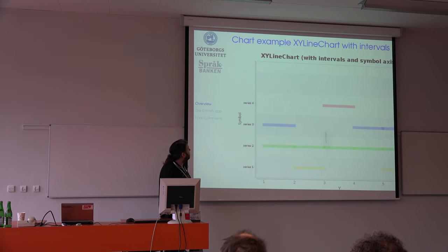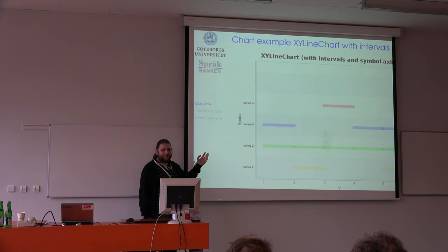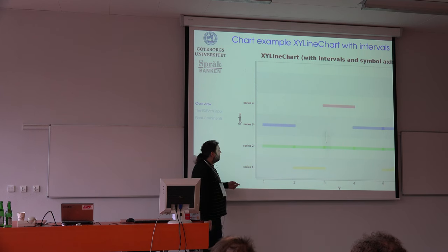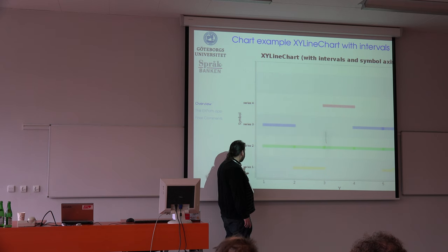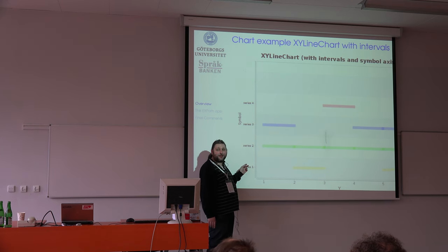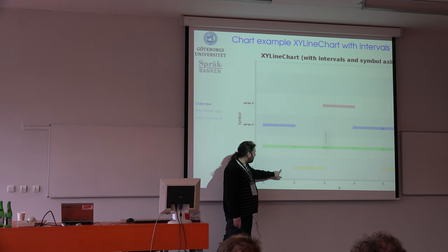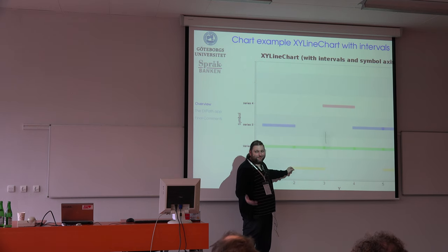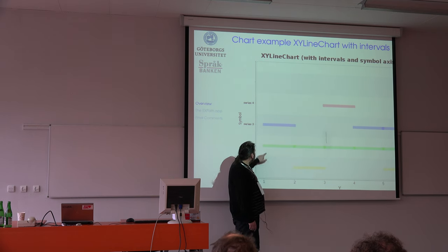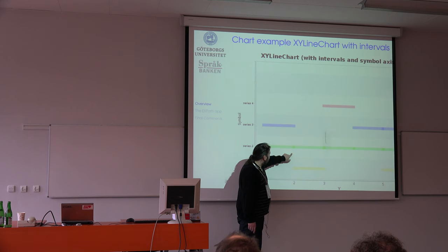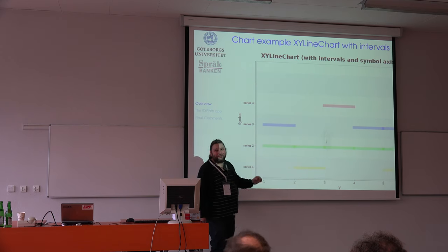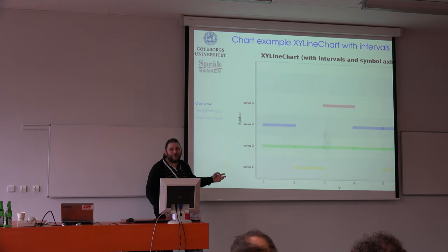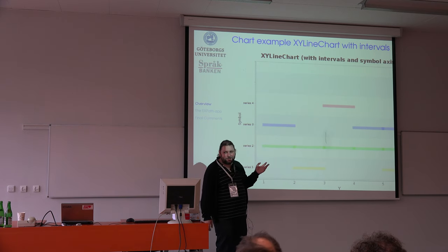Something which is brand new is the XY line chart with intervals. This makes it possible to show, for instance, that series one is a character on stage — or she is not on stage until here, for instance. You can see who is on stage at any given point. You could also use this as a Gantt chart.